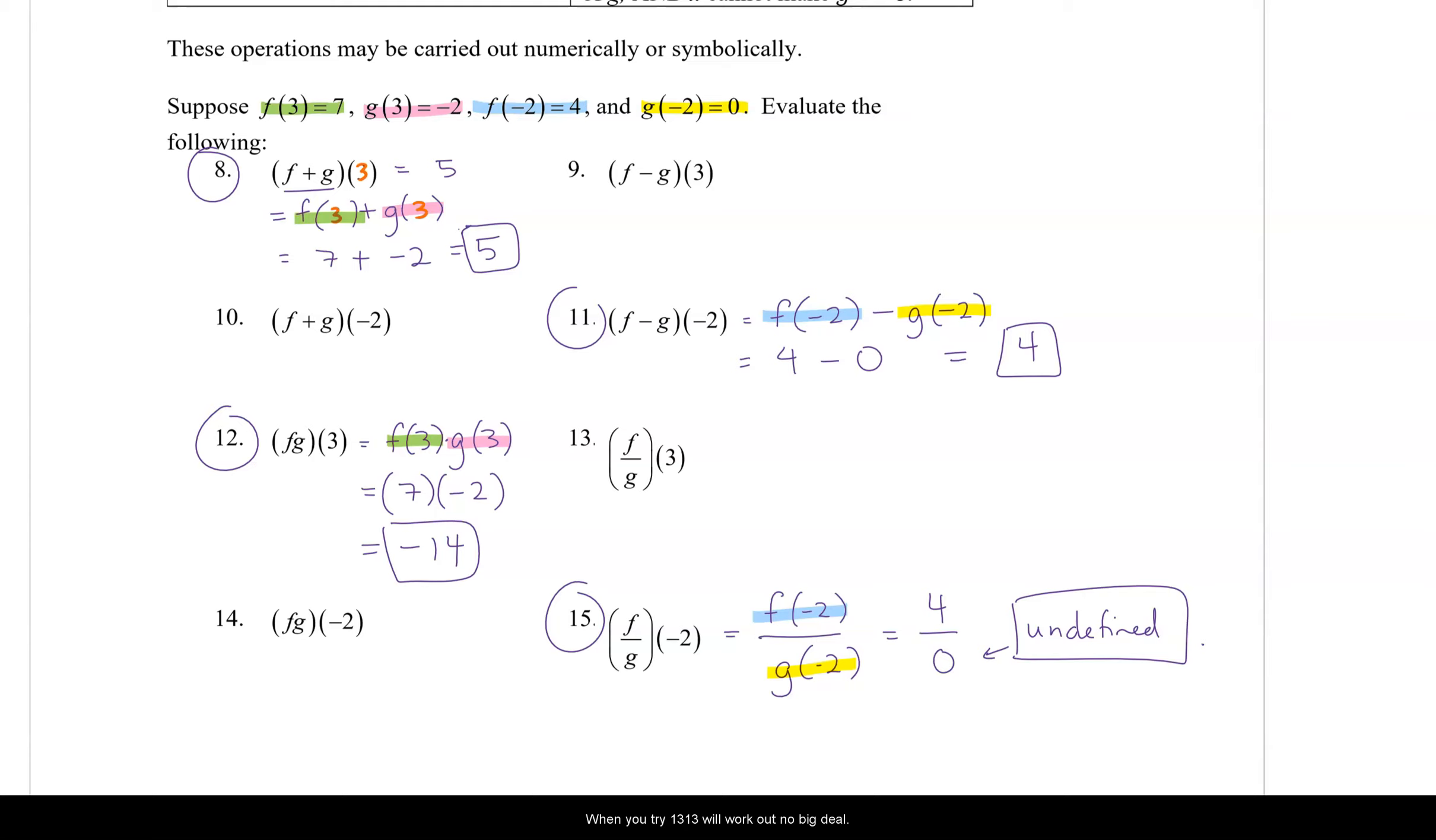When you try 13, 13 will work out, no big deal. Throwing up a couple of answers up here, this is negative 7 halves. This is 4, this is 4, and f of g, and this is, last one, 14 is 0. So just some numbers up there to help you check your own work, but work it out top to bottom. Show all your work, show your operations so that you understand why these numbers are coming out the way that they are. And there you have numerically.